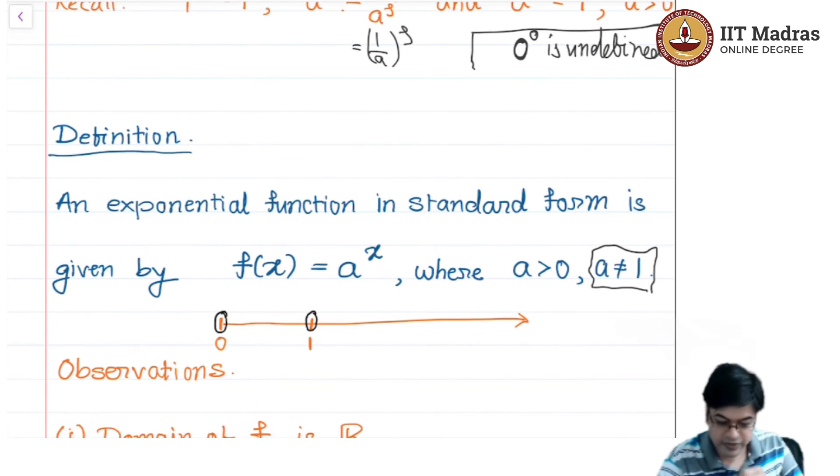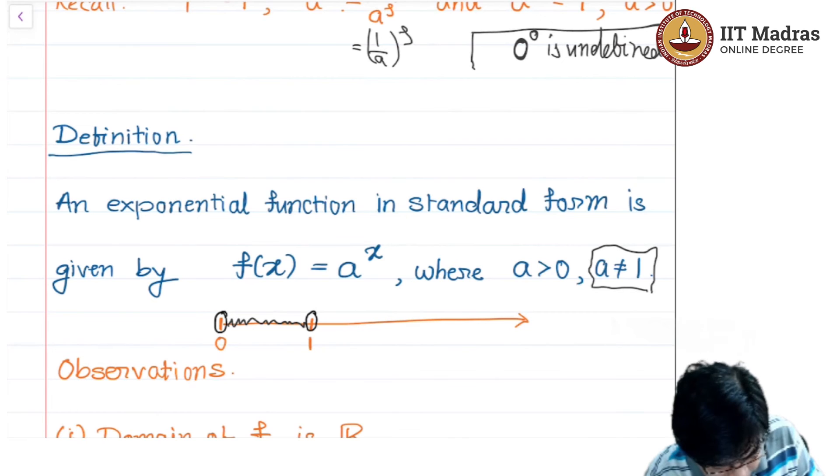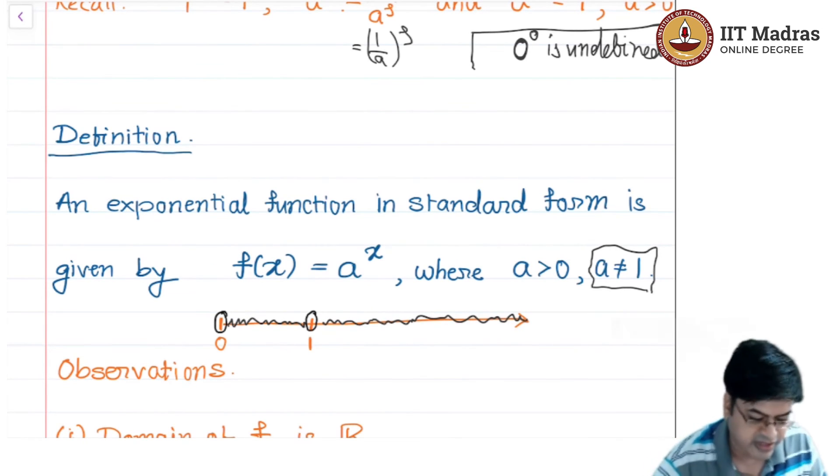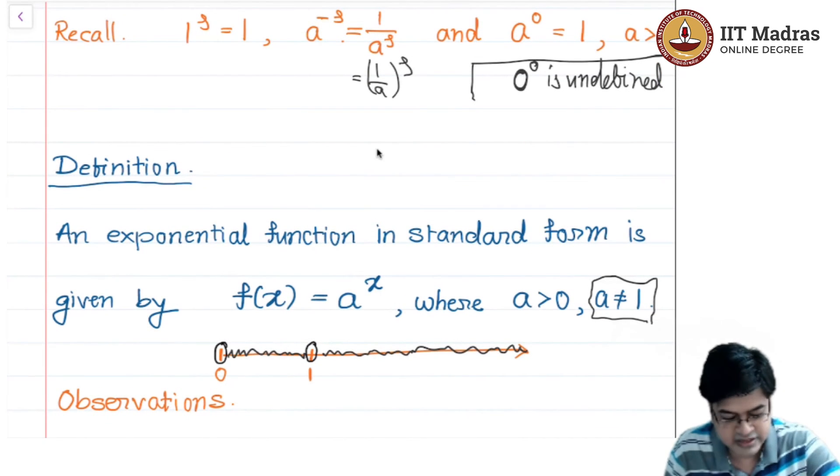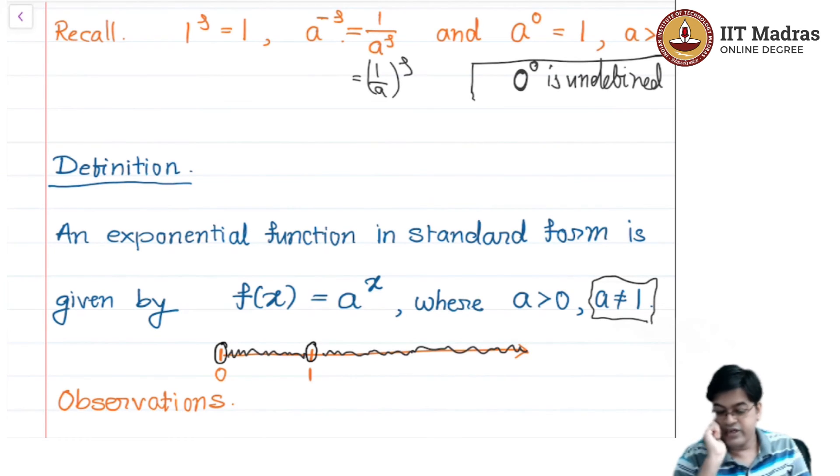Right now, if you look at the values of a, a should be greater than 0, that means all these values are allowed, and a should not be equal to 1, that means all these values are also allowed, barring the values 0 and 1. From the definition, the first observation you can figure out is because you have barred the values 0 and 1, the function f(x) = a^x will have a domain which is the entire real line. For every x belonging to R, we should be able to compute a raised to x.